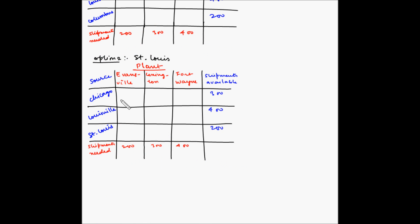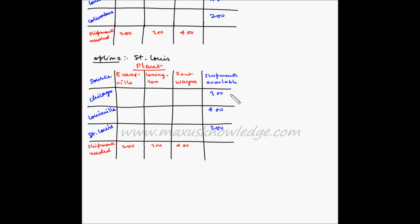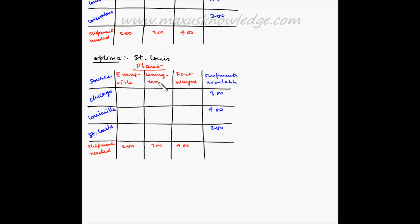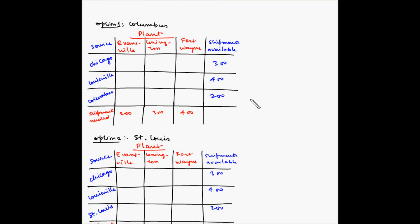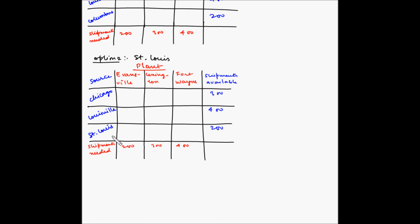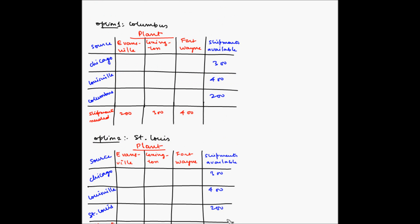Similarly, for option number two, on the left-hand side are the sources: Chicago, Louisville, and St. Louis — where Chicago and Louisville are the existing sources and St. Louis is one of the candidate options. On the right are the shipment capacities: 300, 400, and 200. On the top are the plants — Evansville, Lexington, and Fort Wayne — and at the bottom are their individual demands: 200, 300, and 400. The idea is to find out which setup gives us the lower total transportation cost.